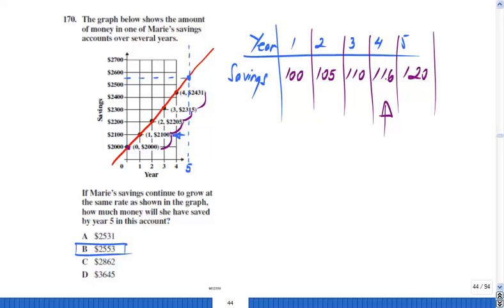$100, $105, $110, $116, so it looks like I'm going by five. There's a plus 5, there's a plus 5, plus 5, plus—well, here's plus 6, but that's approximately 5 and I will say plus 5. So if you go to the fourth year, the amount of money was $2431, to which you're adding $120.